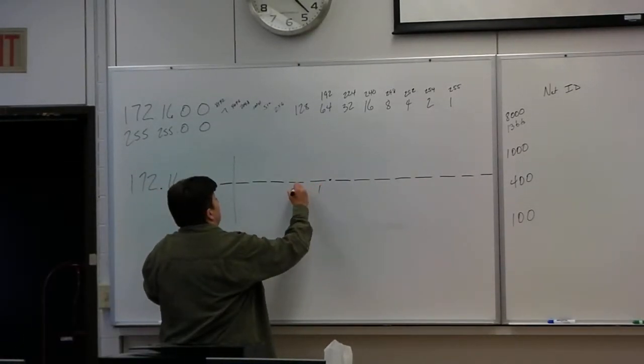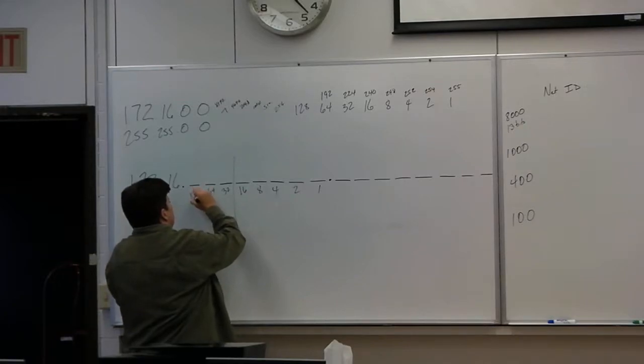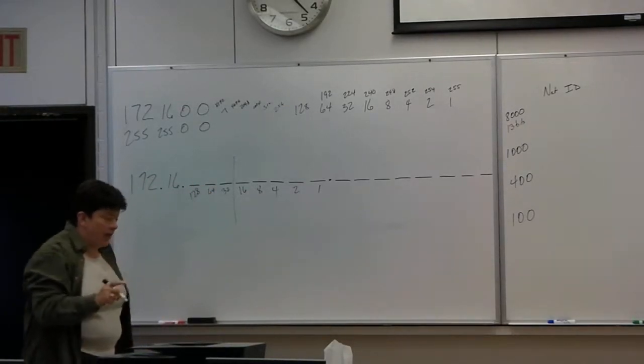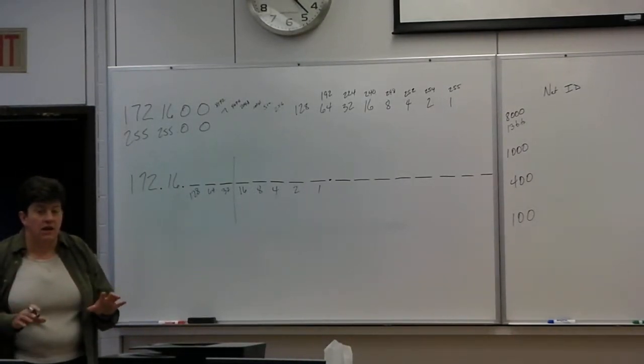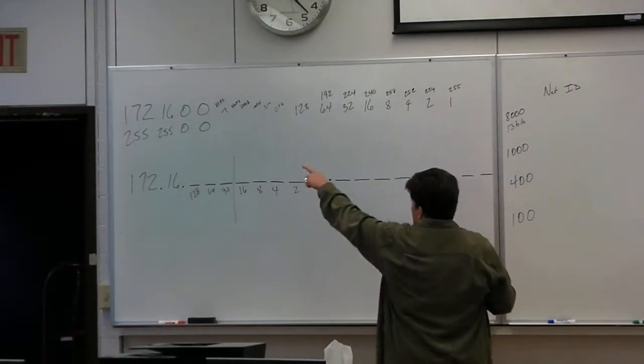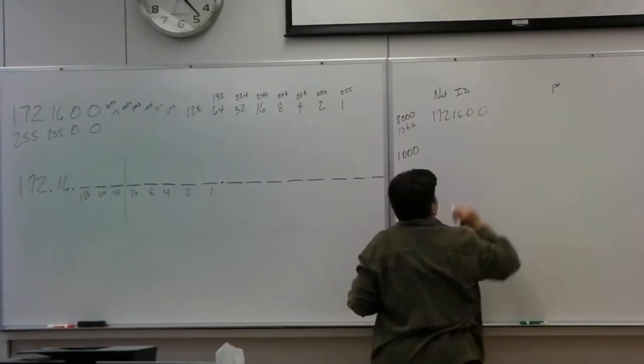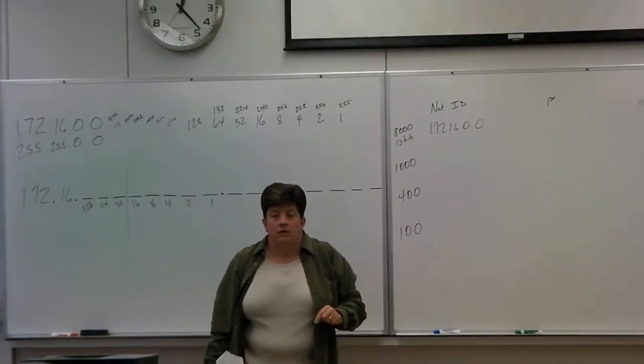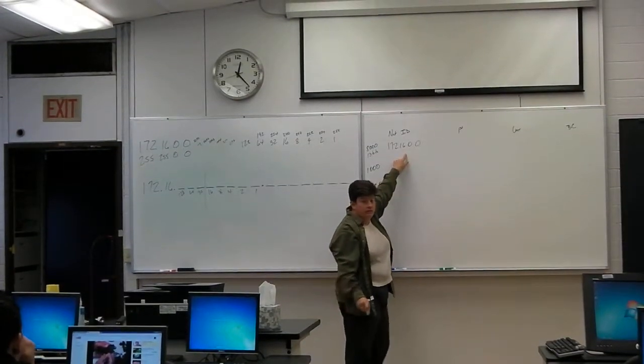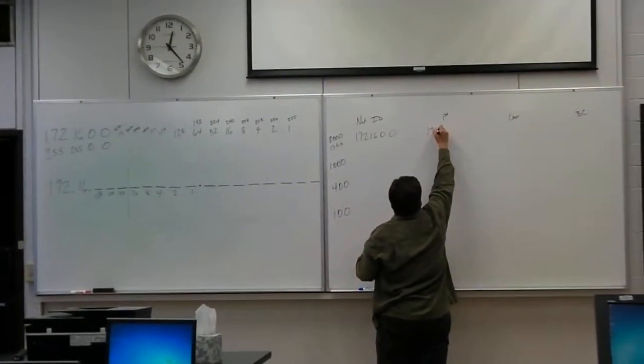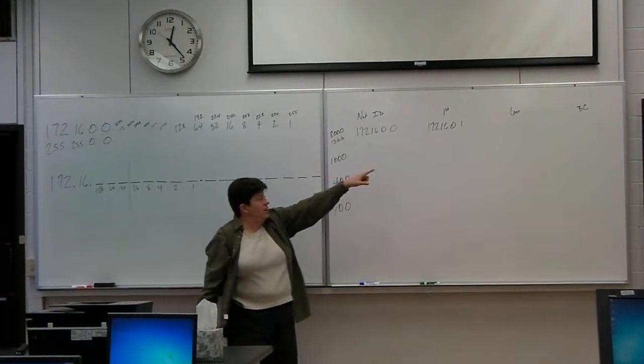I am allowed to use the zero network. So your very first network ID is going to be the address that you own. So we already know our first usable as well, correct? Because I just have to add one to this.